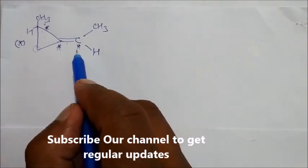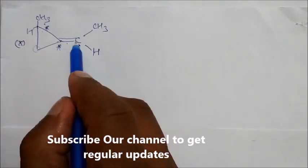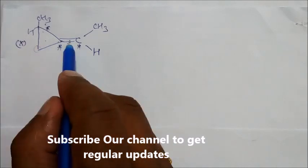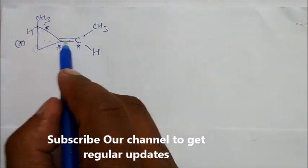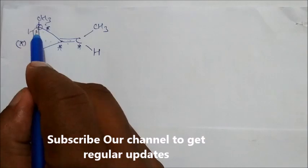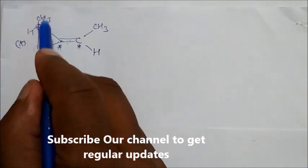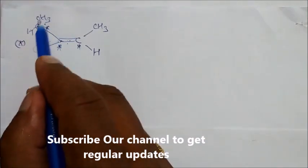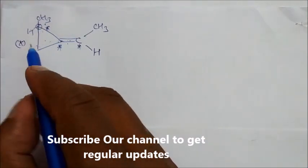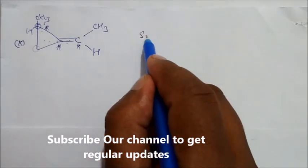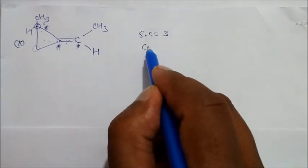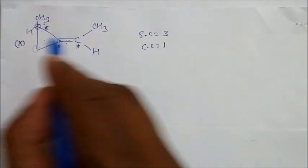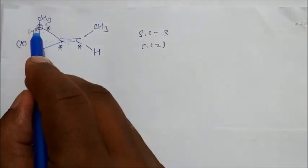Now let us check chiral centers. In this case, chiral centers are not possible because one double bond and one ring is there — double bond and ring. But in this case we check it: is it chiral? Yes — one, two, three, four — the four groups are different. So we can say stereocenter count is three, and the chiral center — you can see one is a ring — the chiral center is presented here.